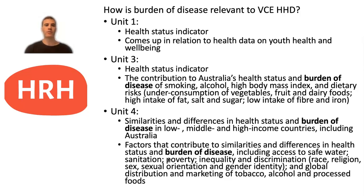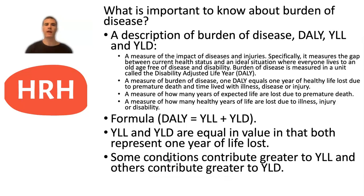In Unit 4 it comes up towards the beginning of area of study 1 when looking at similarities and differences in health status and burden of disease of low, middle and high income countries. And then you're looking at a range of different factors that contribute to these similarities and differences. For example, you need to understand how access to safe water might contribute to burden of disease in these particular countries. It's a concept students often get a little confused about, but it comes up quite a bit across Unit 1 to 4 HHD, so it's important that you understand it.